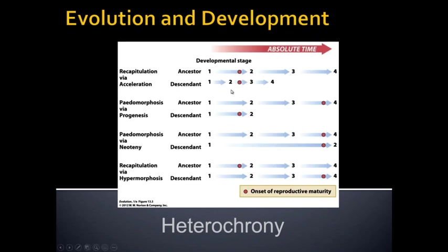Recapitulation via acceleration is where a step in the process speeds up dramatically — step two takes a very short time, going from step two to step three much faster than normal. This could result in hatching or being born earlier, or if other developmental processes don't change their timing, a change in the way the organism looks. Another type is paedomorphism via progenesis, where we truncate a developmental process and end up with a very different-looking end result than if we had gone through all the other steps.